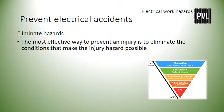The most effective way to prevent an injury is to eliminate the conditions that make the hazard possible. An example of eliminating the hazard of falls is by eliminating or substituting the job that requires work in elevated areas. Completely eliminating hazards is often time- and resource-consuming and can be impractical.